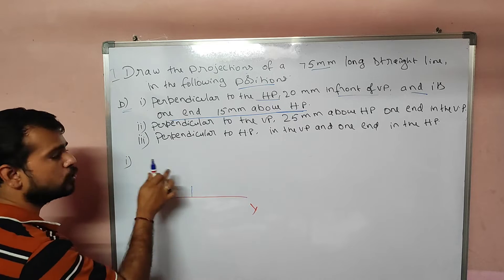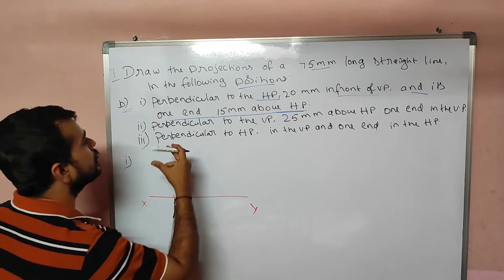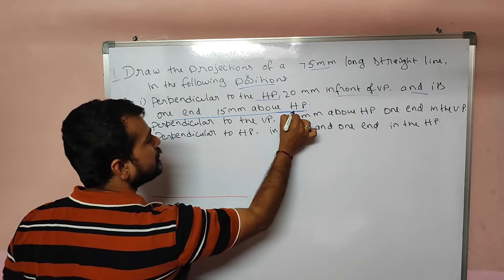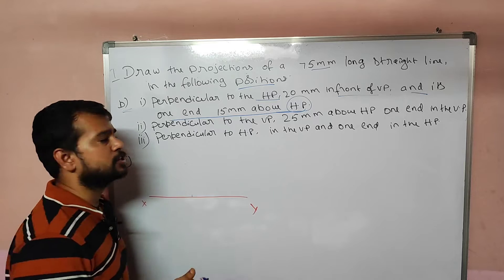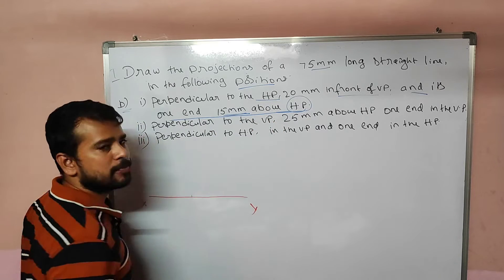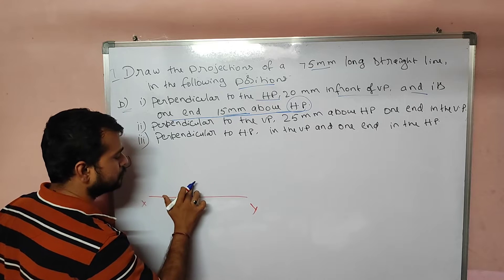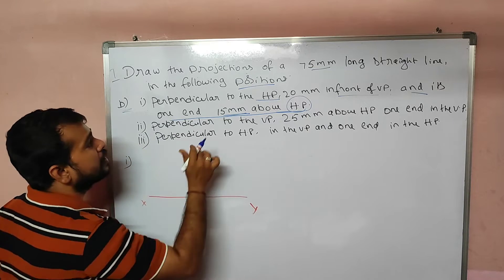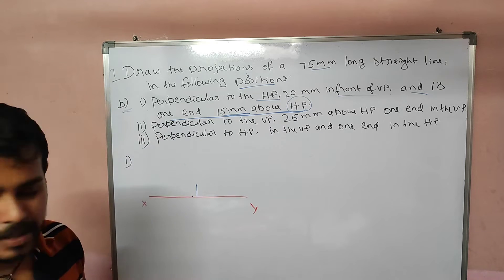It's a point in front view. The front view is a point on the XY line above it. In front view, the XY line above it. Perpendicular to HP, 20mm in front of VP. The front view is related with HP. If it's 15mm above HP, we draw a 15mm gap, then we draw the line. 15mm gap. Line is 75mm. Draw a 75mm line.